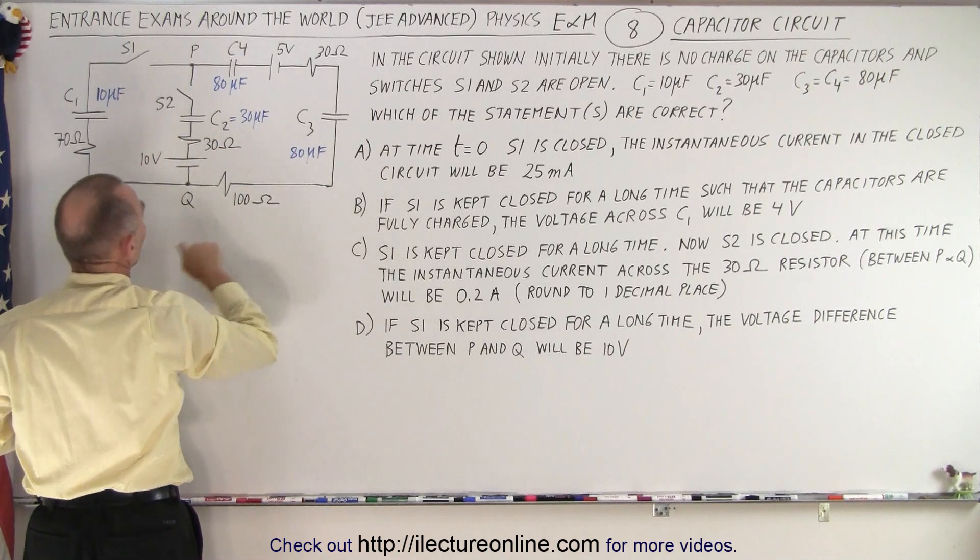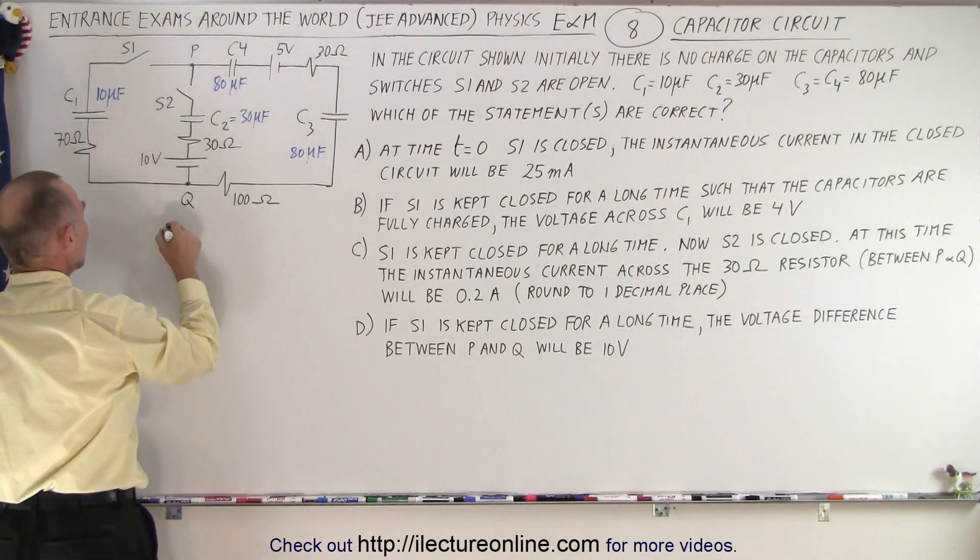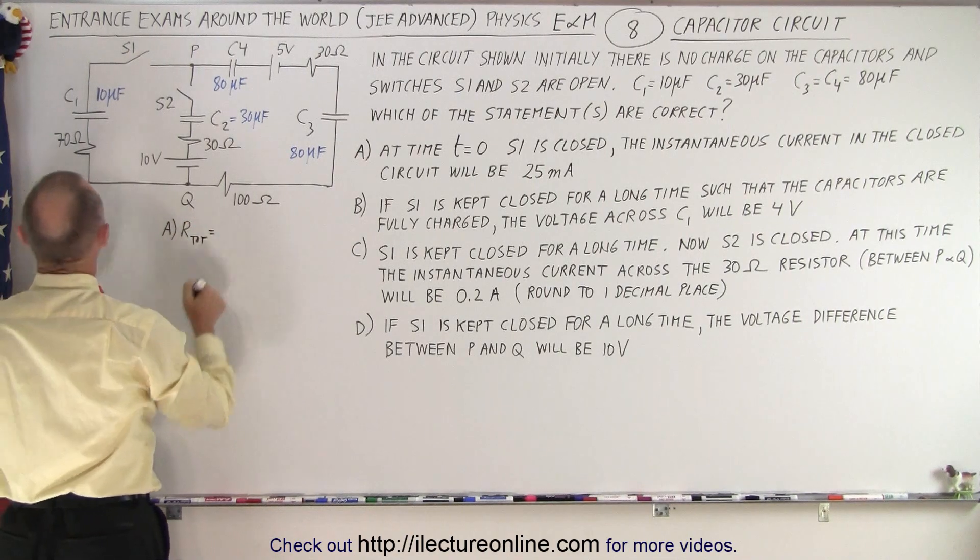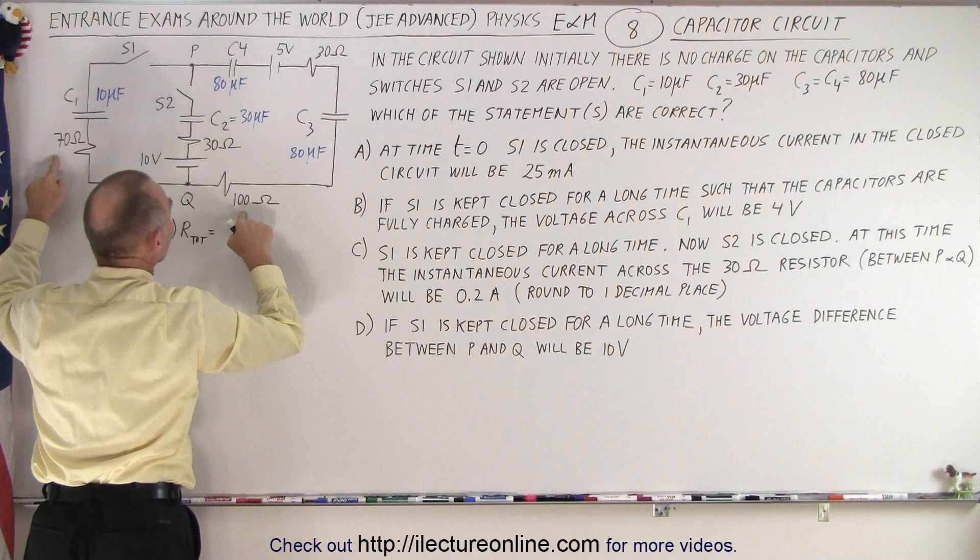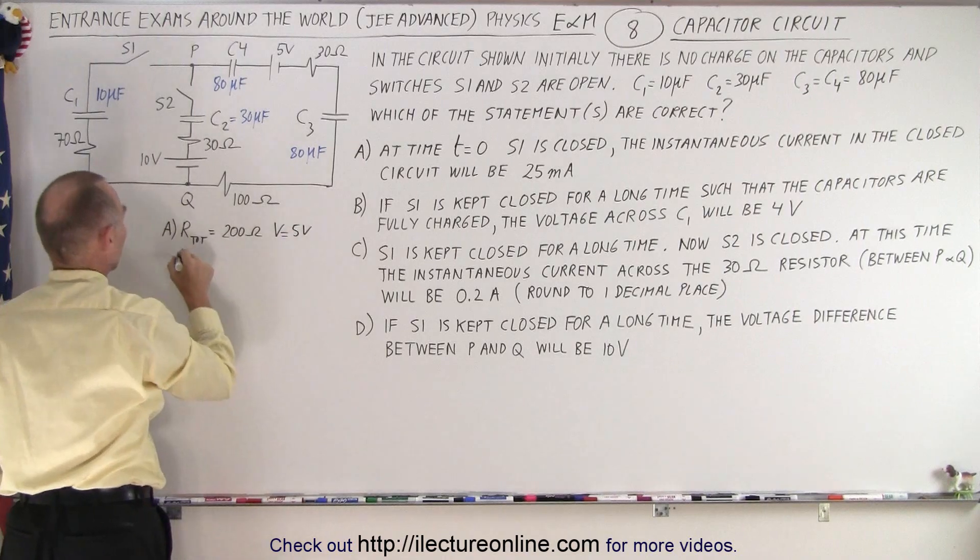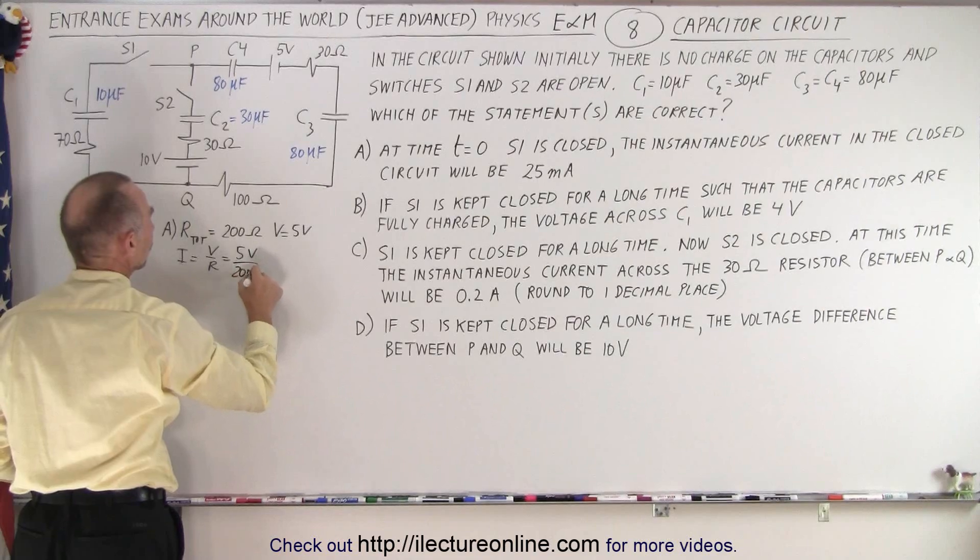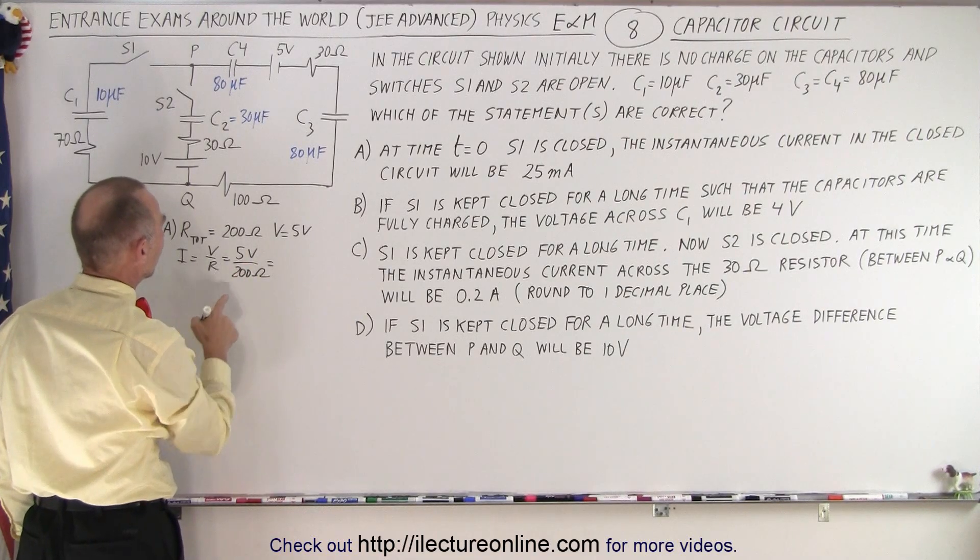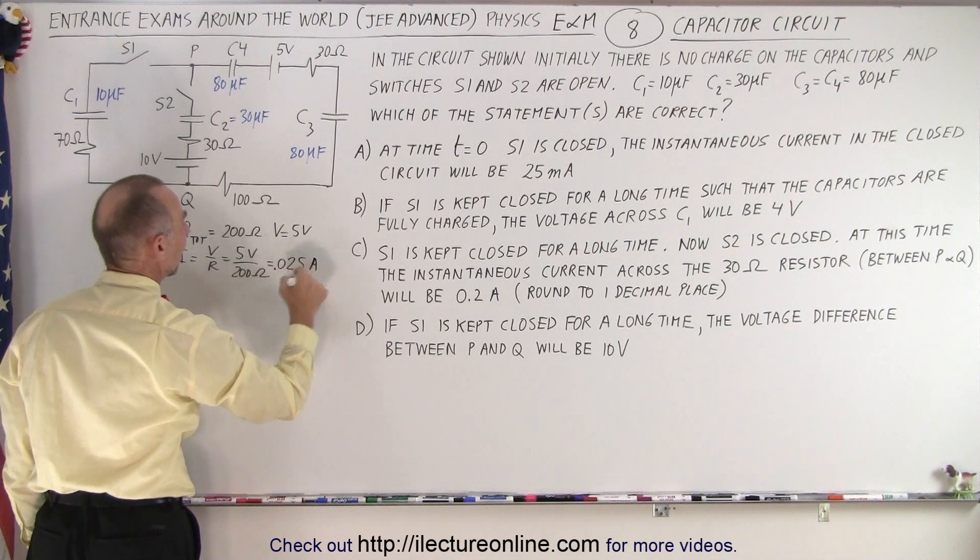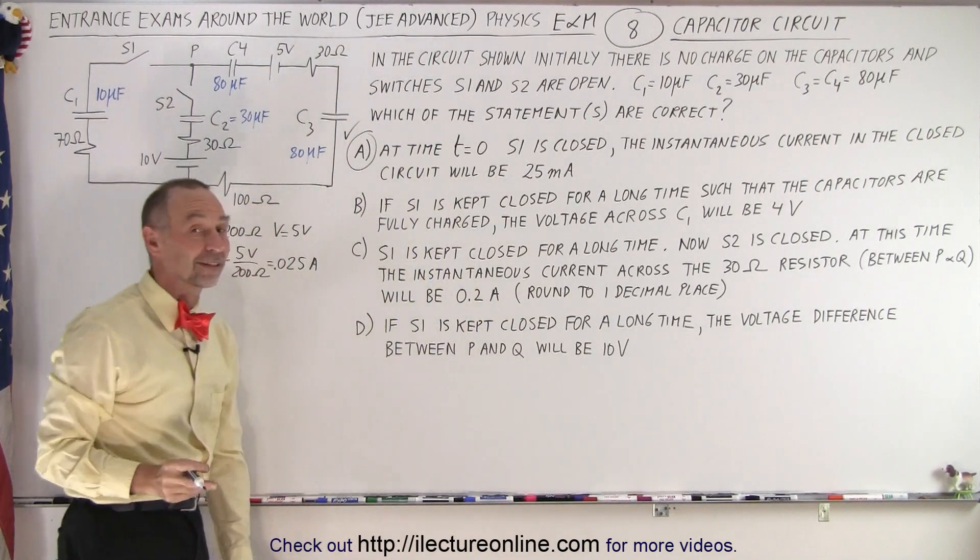So essentially we have five volts that goes around the circuit, and we have three resistors in series. So for part A, the resistance total is equal to 70 plus 30 plus 100, which is 200 ohms. The voltage is 5 volts, and so the current, which is V over R, is 5 volts divided by 200 ohms. That would be 0.025 amps, and so sure enough, 25 milliamps, so A is indeed correct.